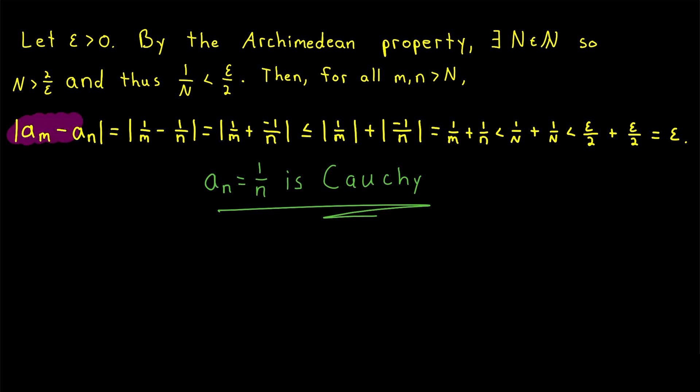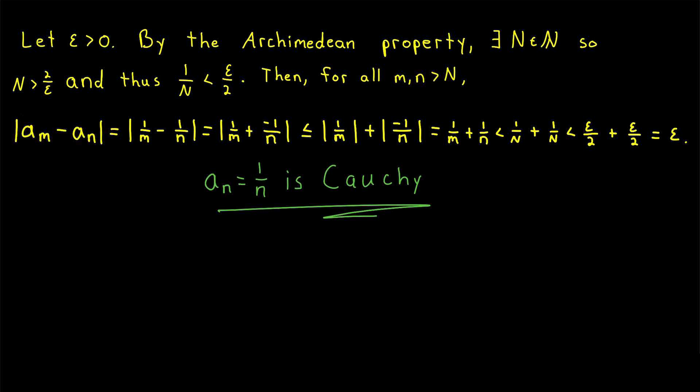So the distance between any two terms of our sequence after the big N-th term is less than epsilon. Therefore, the terms of the sequence 1 over n are getting arbitrarily close together, and thus it is a Cauchy sequence. And as we'll prove soon, this means that 1 over n is a convergent sequence. In that way, we've proven that 1 over n converges without involving the limit. And that's what's so powerful about the Cauchy criterion for sequences.